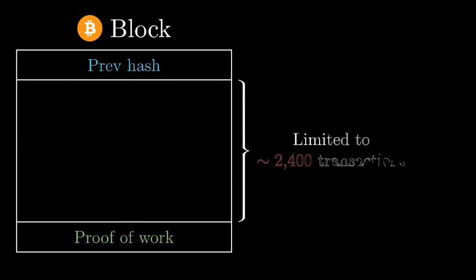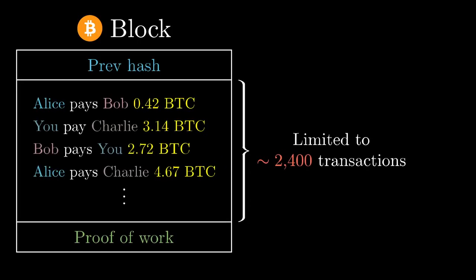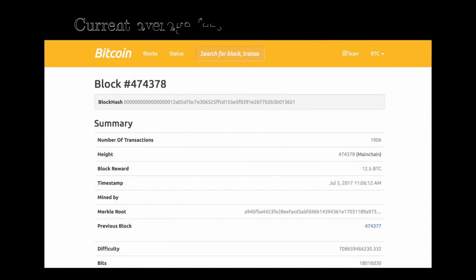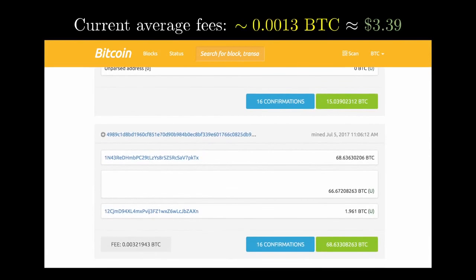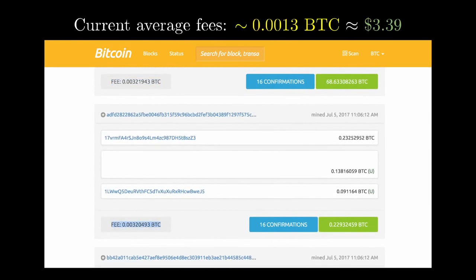You see, in Bitcoin, each block is limited to about 2,400 transactions, which many critics argue is unnecessarily restrictive. For comparison, Visa processes an average of about 1,700 transactions per second, and they're capable of handling more than 24,000 per second. This comparatively slow processing on Bitcoin makes for higher transaction fees, since that's what determines which transactions miners choose to include in a new block.